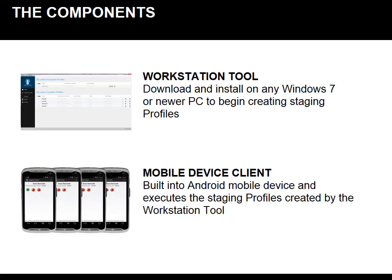How it works: there are two components to the StageNow solution. First, the workstation tool, and secondly, the device client. The workstation tool can be downloaded and installed on any Windows 7 or newer PC. Here you can create your staging profiles using wizards and output them into barcodes or NFC tags. The mobile device client comes installed on Android Zebra KitKat devices out of the box and allows you to scan the barcodes and NFC tags in order to stage your device.